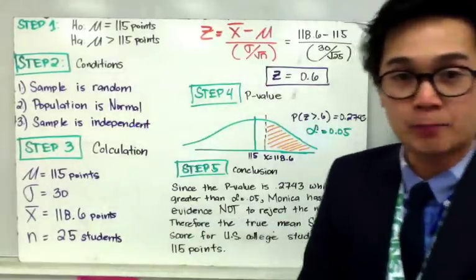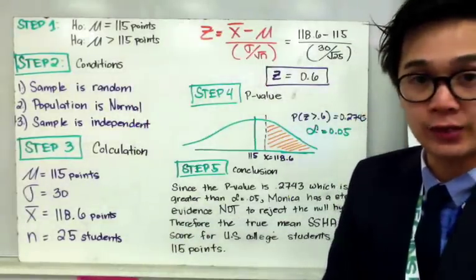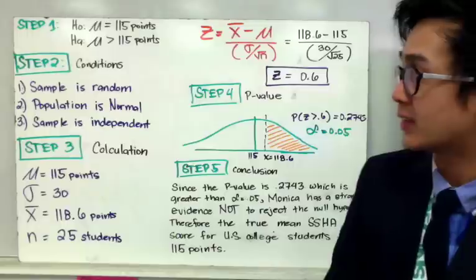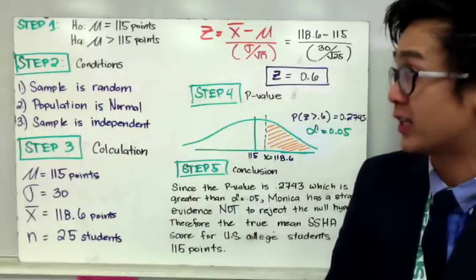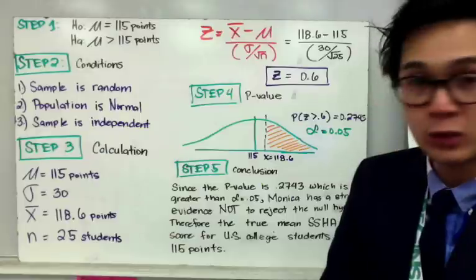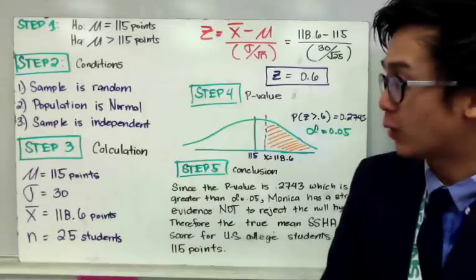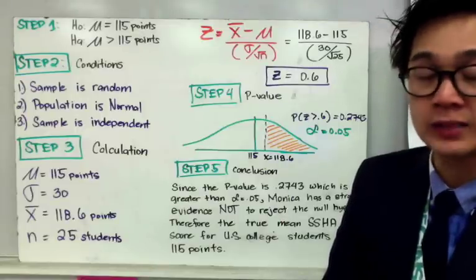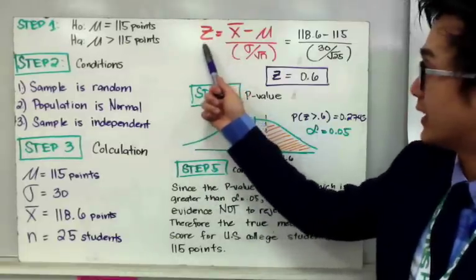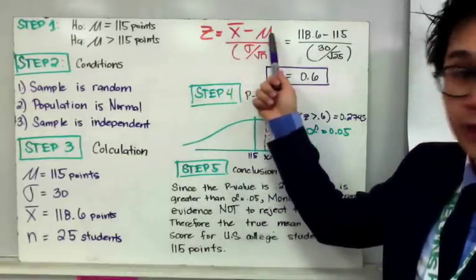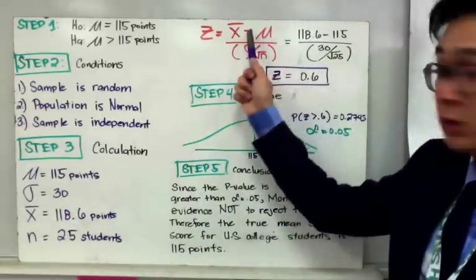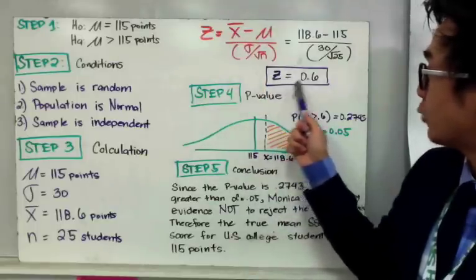Our second step is satisfying our three conditions. We have satisfied all three conditions because the problem states the sample is randomly selected, the population is normally distributed, and the population size is 10 times the sample size. For step three, calculation, we use our population mean, population standard deviation, sample mean, and sample size to find our test statistic Z. The formula is Z equals the sample mean minus the population mean, all over the population standard deviation divided by the square root of the sample size. Plugging in the values gives us a test statistic of Z equal to 0.6.